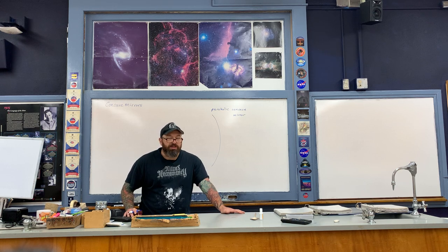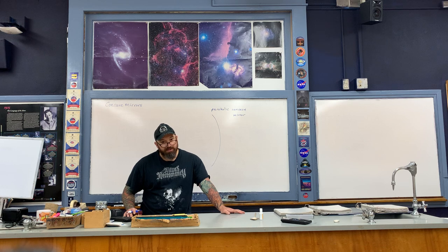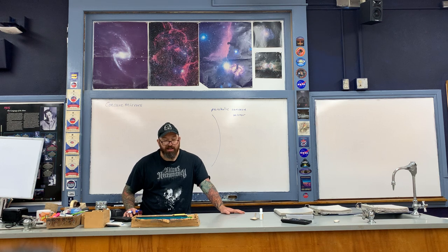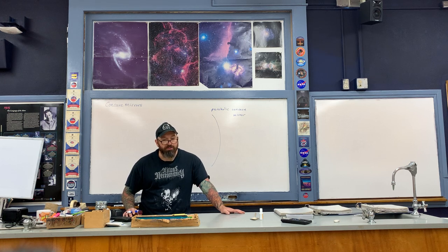Now that you've seen that demonstration — and admittedly seeing it on video is not as effective as seeing it in person — what you saw was the image of the light bulb upside down. The bulb was actually upside down inside the box, so you saw the image right side up on top of the box and in front of the box. This is usually very startling to students when they see it in person walking into the classroom.